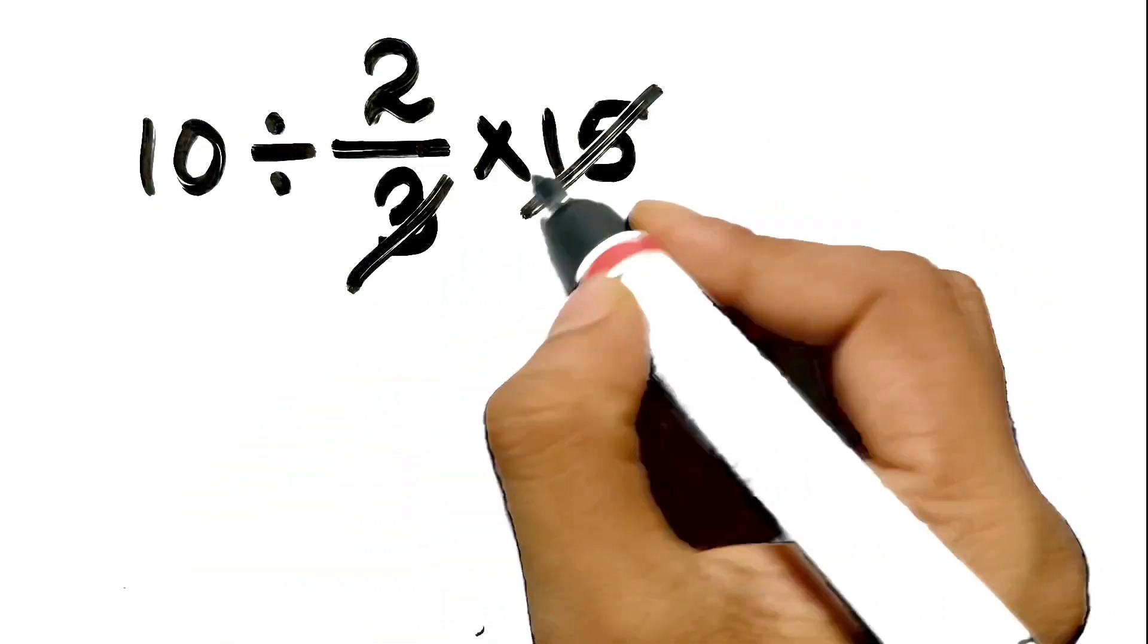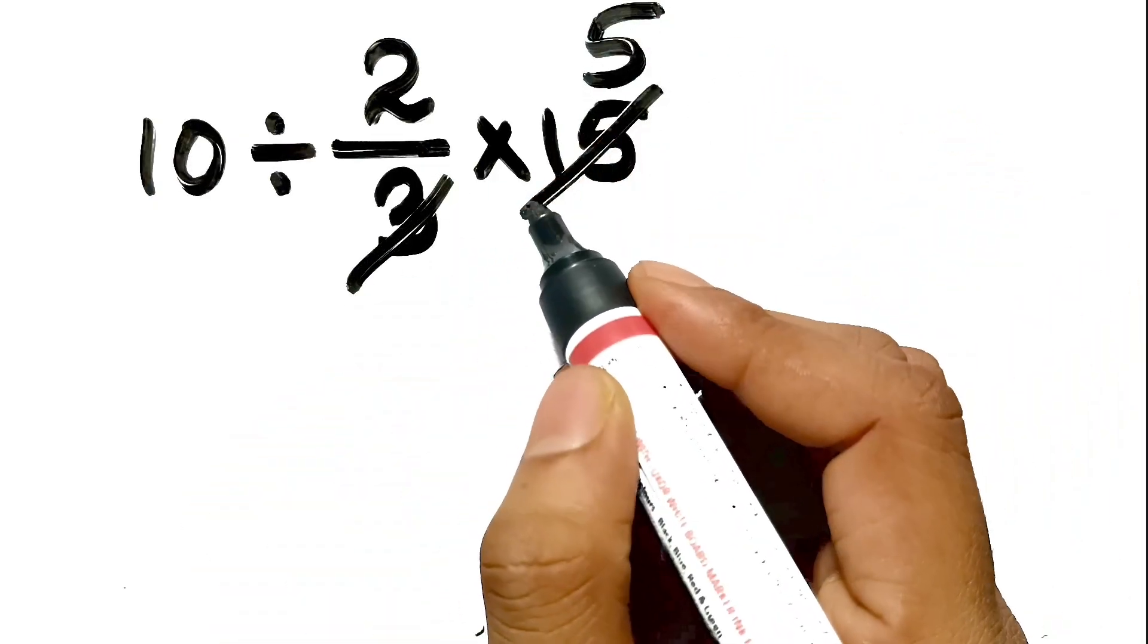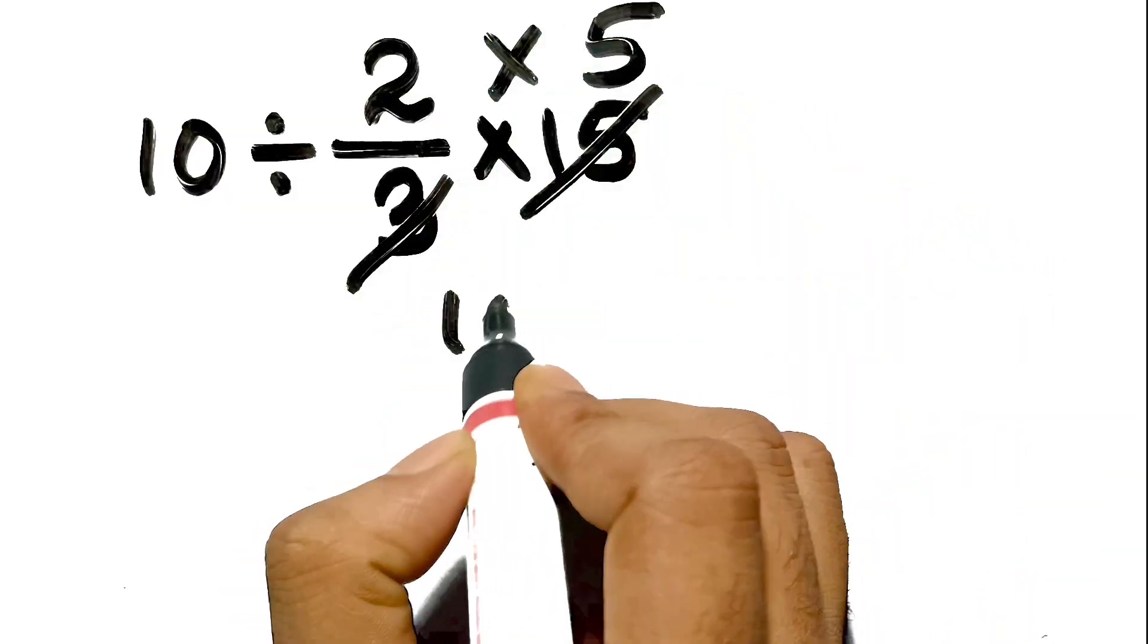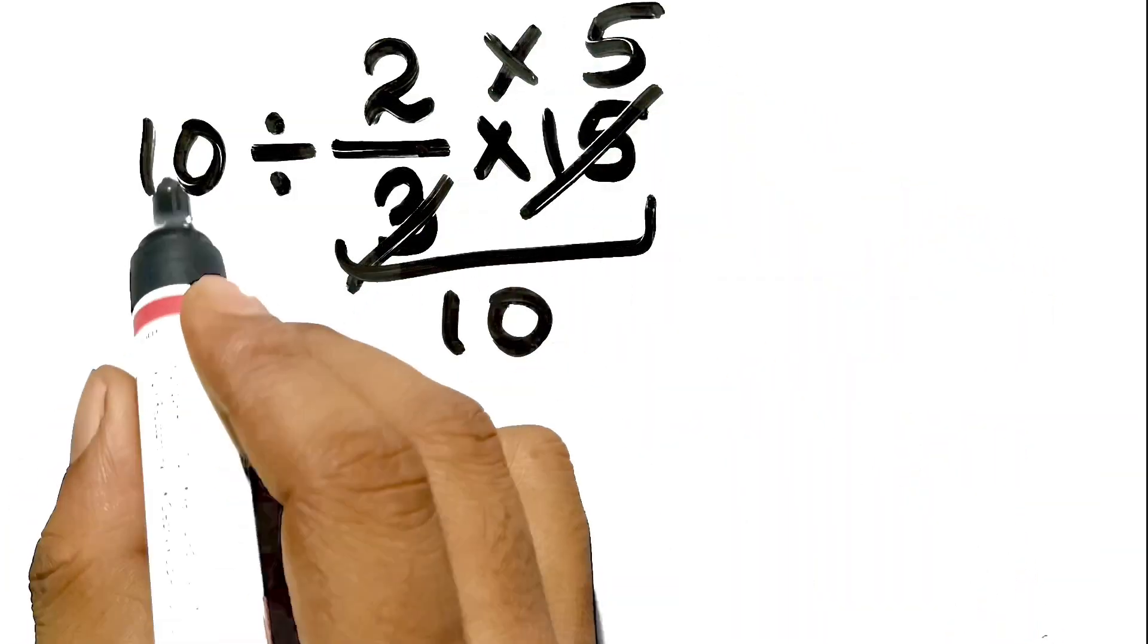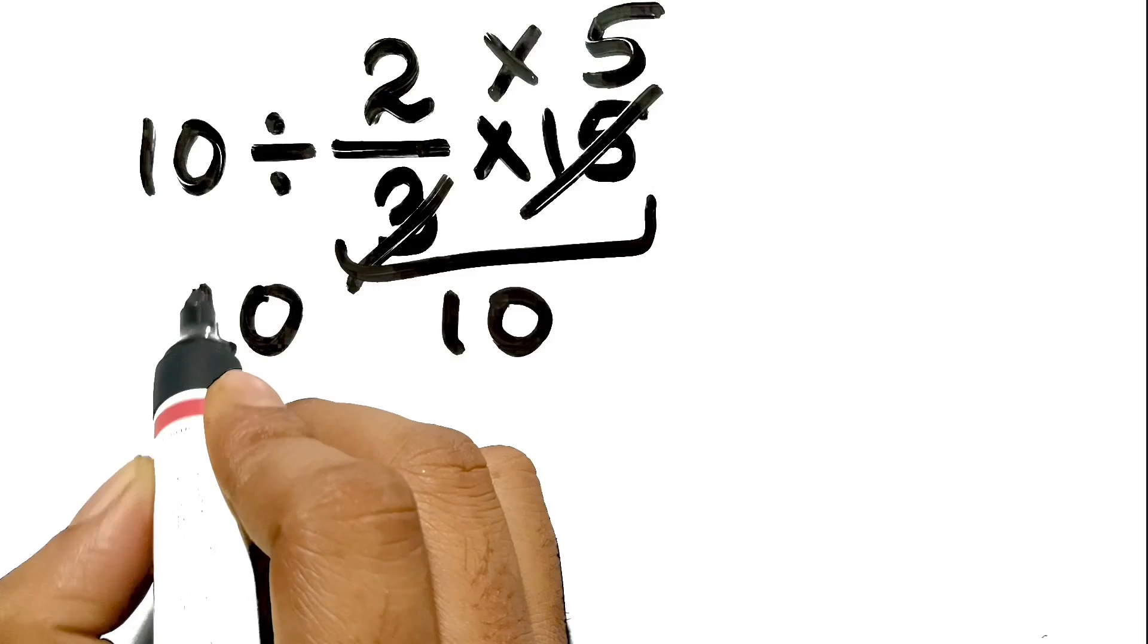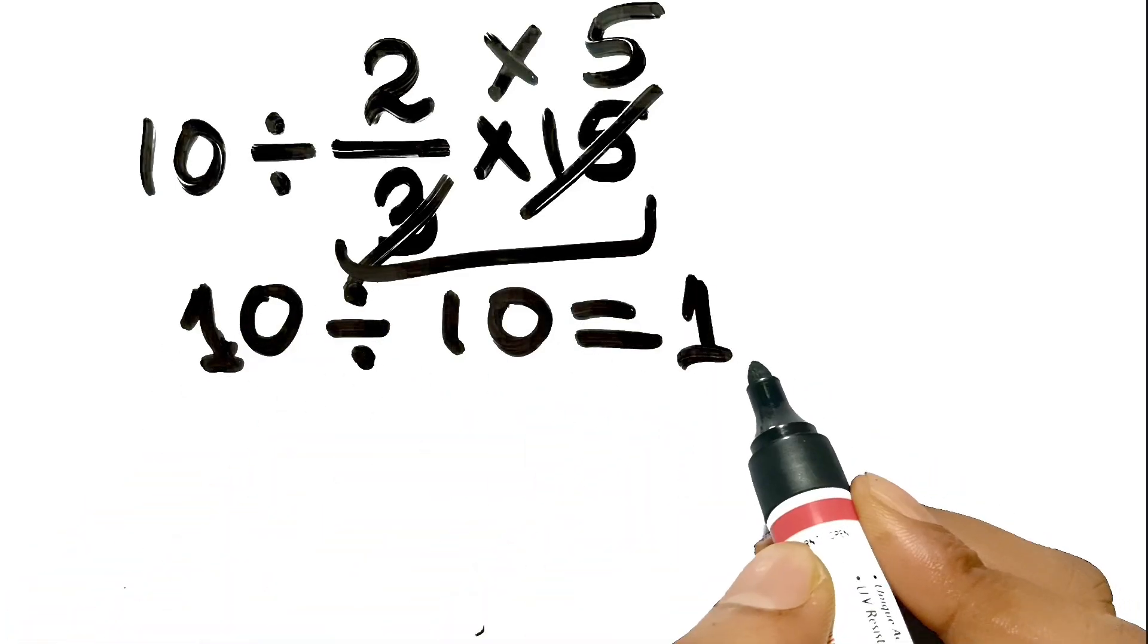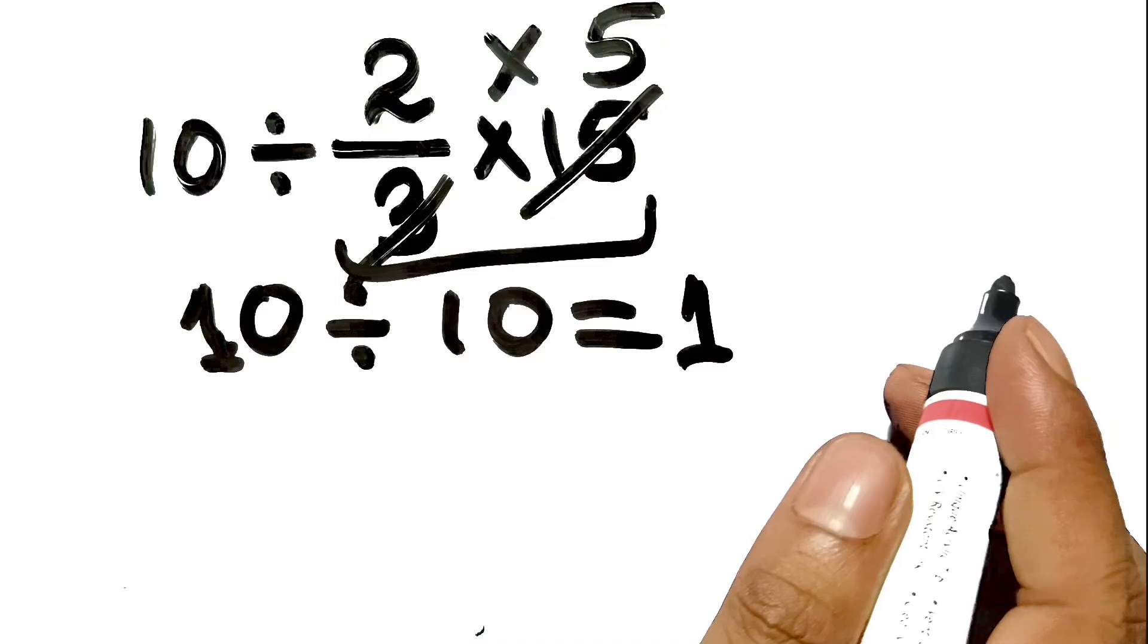3 divides into 15 exactly 5 times. So we take the numerator 2 and multiply it by 5, which gives us 10. And again, here we have a 10 at the start. So we take 10 divided by 10, which equals 1. It looks like a perfect solution.